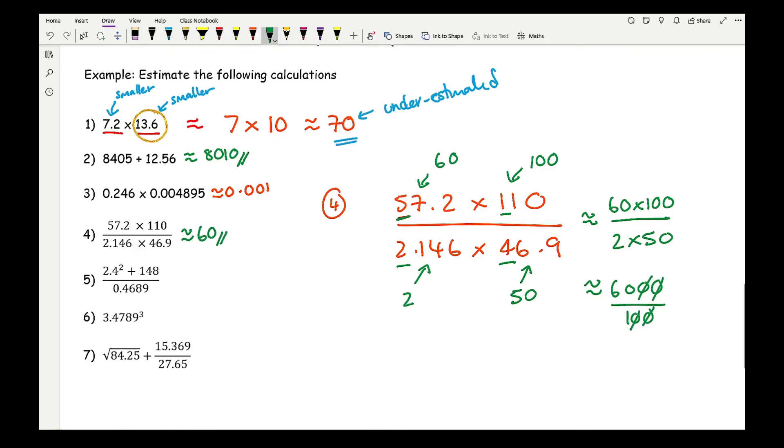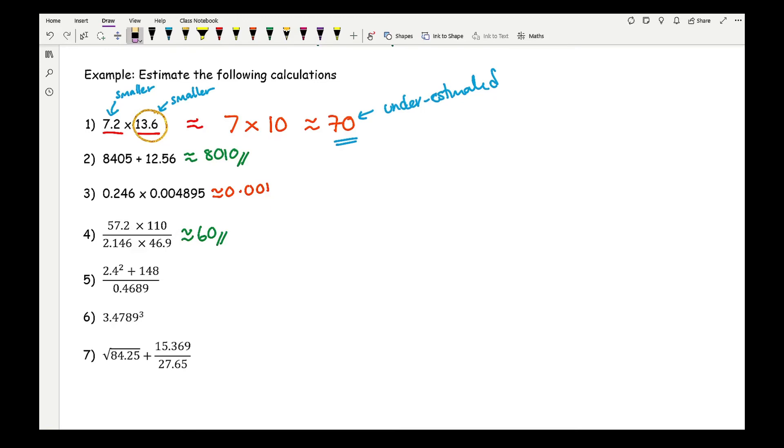And then looking at question 5. So with question 5, I'm going to do the exact same. Now these questions tend to appear with fractions and tend to appear more on higher GCSE, but again it's very common to get these on any exam paper. So I've got 2.4 squared plus 148 all over 0.4689. Now looking at this, you want to make your life easier, so that's going to be 2 squared, this is going to be 100, and this is going to be 0.5.